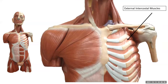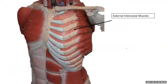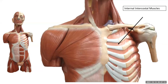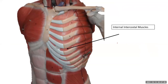The external intercostal muscles are more lateral, and those fibers run down and in — similar to external oblique muscles — like putting your fingers in your pockets, down and in towards the center. The internal intercostal muscles go up and towards the midline. Both help with respiration as the thoracic cavity expands and contracts.